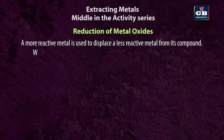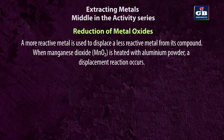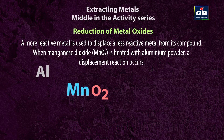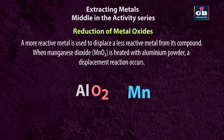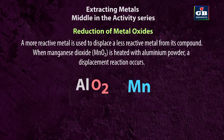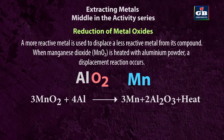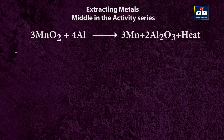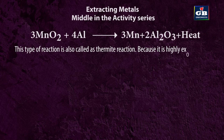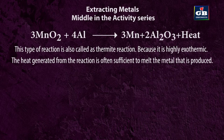A more reactive metal can be used to displace a less reactive metal from its compound. When manganese dioxide is heated with aluminium powder, a displacement reaction occurs. Aluminium, being highly reactive, acts as a reducing agent and displaces manganese from manganese dioxide, reducing it to metallic manganese while oxidizing itself to aluminium oxide. 3MnO₂ + 4Al → 3Mn + 2Al₂O₃ + heat. This type of reaction is called a thermite reaction because it is highly exothermic — a lot of heat is released, often sufficient to melt the metal produced.